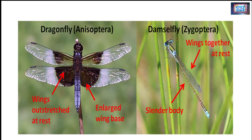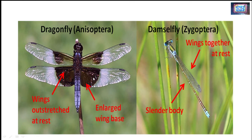Dragonfly and damselfly both belong to the order Odonata. The dragonfly belongs to the suborder Anisoptera and the damselfly belongs to the suborder Zygoptera. The morphological difference is that when a dragonfly rests, its wings are outstretched — spread wide during the time of rest. The damselfly, on the other hand, has a slender body and folds its wings along the body at rest.